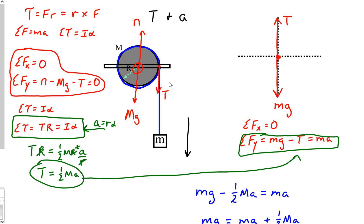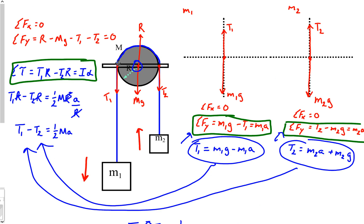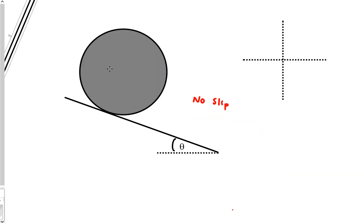We've done a cylinder that had a rope wrapped around it and a mass attached to it, then we also did a pulley which was a solid cylinder with two masses attached. Now we want to look at a cylinder that's free to roll down a hill.